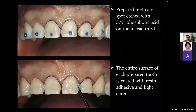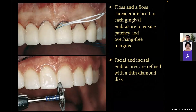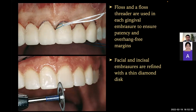The entire surface is etched, the tooth is coated with resin adhesive and light cured. The facial and incisal areas of the clear matrix are filled with resin composite. The filled matrix is placed over the prepared tooth. Floss and floss threader are used in each gingival embrasure to ensure patency and overhang-free margin. Facial and incisal embrasures are refined with a thin diamond disc. Make sure you have covered the patient's lip and tongue, as otherwise it could be a disaster. Give the patient instructions to stay still during that procedure.